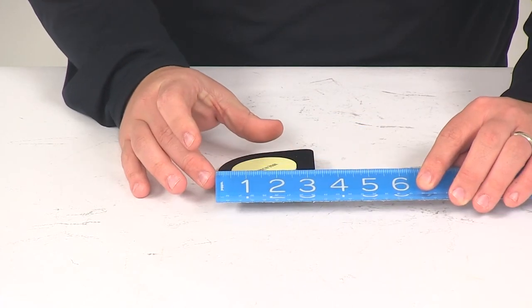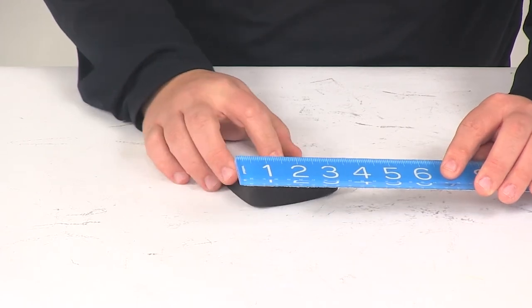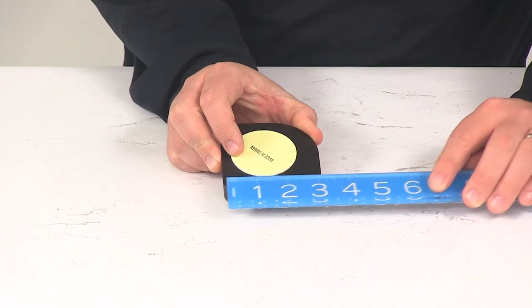The mounting surface, so the backside, this is your overall width, that's going to be three and a quarter by three and a quarter.